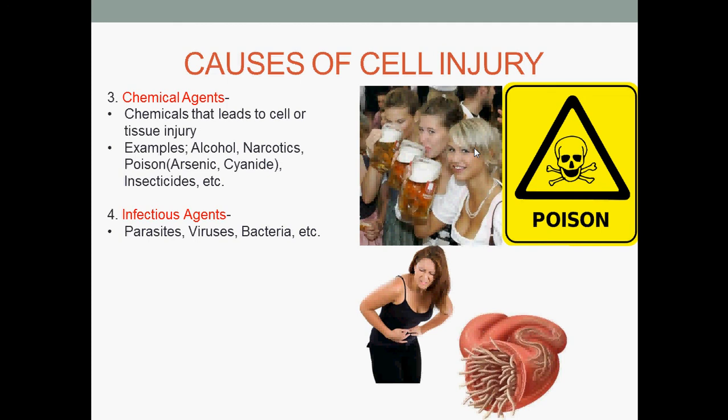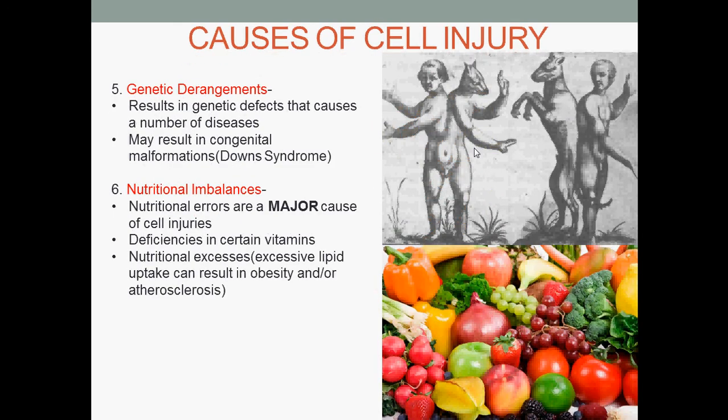Infectious agents such as parasites, viruses, bacteria, or fungi can also cause cell injury. Genetic derangements result in genetic defects that cause a number of diseases and may result in congenital malformations such as Down syndrome, or trisomy 21. Nutritional imbalances are a major cause of cell injuries — being deficient in certain vitamins, or conversely, nutritional excesses such as excess lipid uptake can result in obesity or atherosclerosis.